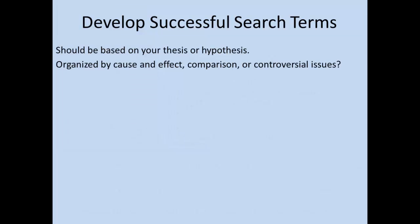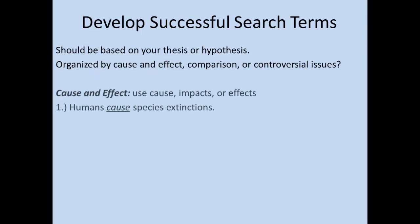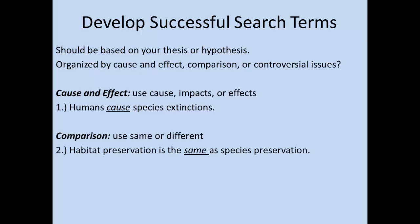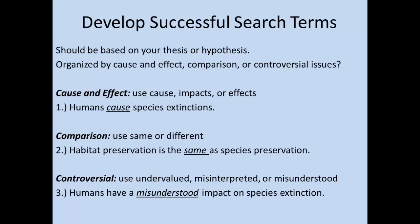Before we head to the library, we'll have to develop some successful search terms. The most effective search terms are based on your hypothesis, and these can be organized by cause and effect, comparison, or a controversial issue. A cause and effect uses terms such as cause, impacts, or effects — for example, 'humans cause species extinction.' Comparisons use terms such as same or different — for example, 'habitat preservation is the same as species preservation.' Controversial terms might include undervalued, misinterpreted, or misunderstood — for example, 'humans have a misunderstood impact on species extinction.' Any of these would make excellent search terms.